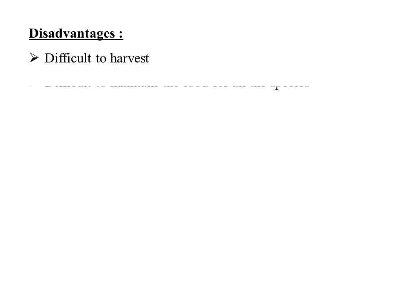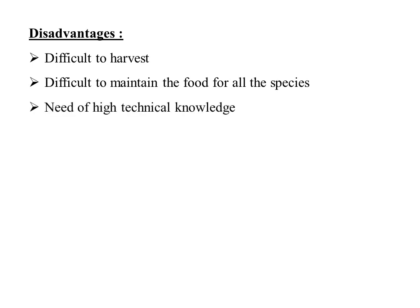The disadvantages of polyculture include: it is difficult to harvest the different variety of species, it is difficult to maintain food for all the species because all species have different feeding habits, and there is a need for high technical knowledge in the polyculture system. In conclusion, all should now have a clear understanding of monoculture and polyculture systems in aquaculture practices, along with their advantages and disadvantages. Thank you for watching.